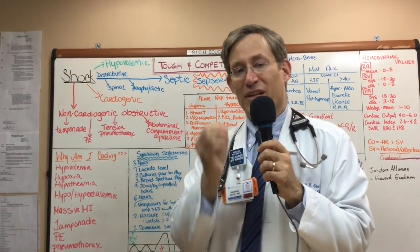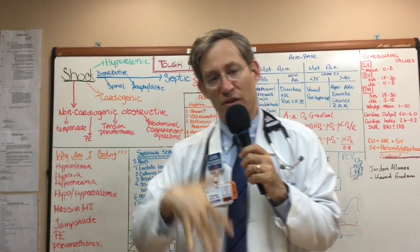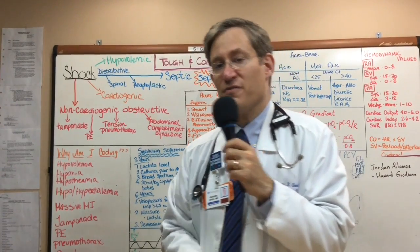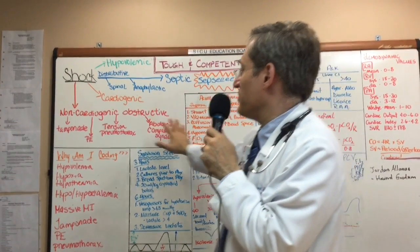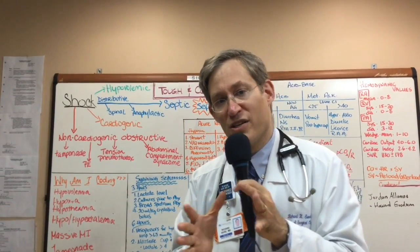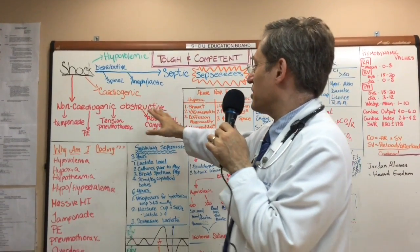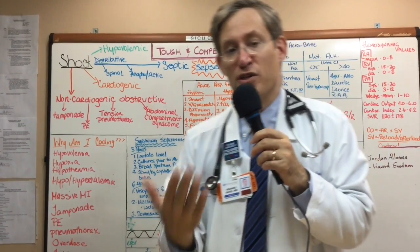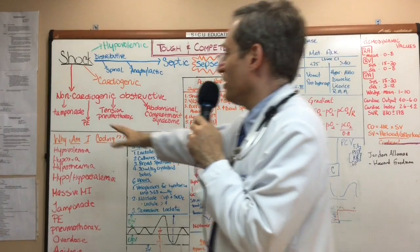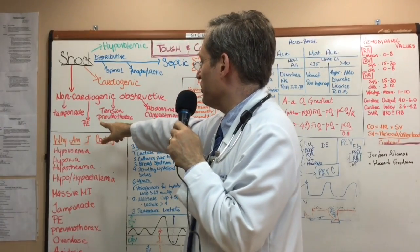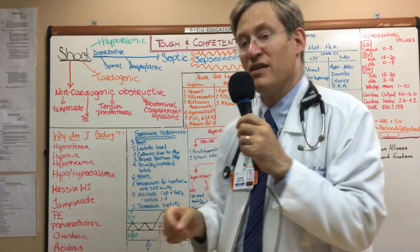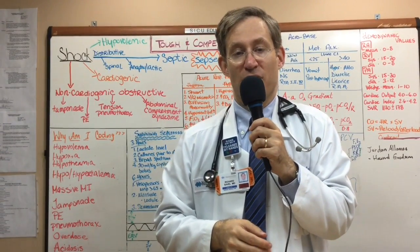Cardiogenic shock is important, but not primarily something you'll see in the surgical ICU, where the primary problem is pump dysfunction. Non-cardiogenic obstructive shock — previously known as cryptogenic shock — presents as though there's pump failure, but fundamentally the heart is working fine. Examples include pericardial tamponade, pulmonary embolism, tension pneumothorax, and importantly, especially in this ICU, the abdominal compartment syndrome.